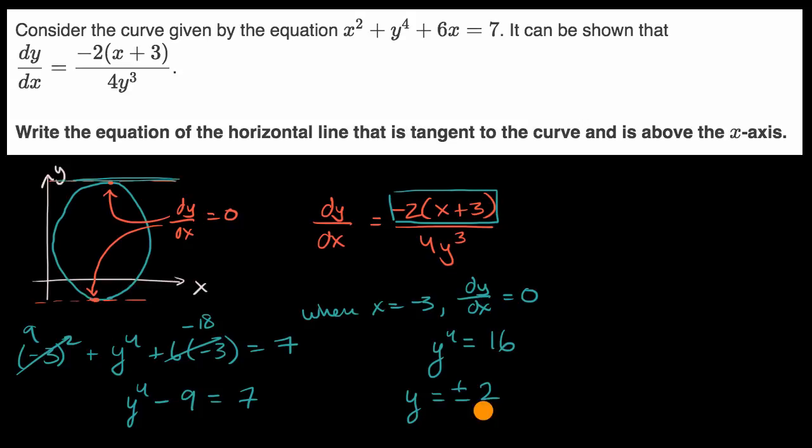Well, there would be then two horizontal lines. One would be y is equal to two. The other is y is equal to negative two. But they want the equation of the horizontal line that is tangent to the curve and is above the x-axis. So only this one is going to be above the x-axis. And we're done. It's going to be y is equal to two.